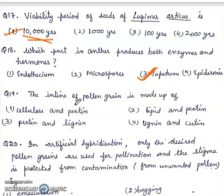Question 19. Intine of pollen grain is made up of: cellulose and pectin, lipid and pectin, pectin and lignin, or lignin and cutin.